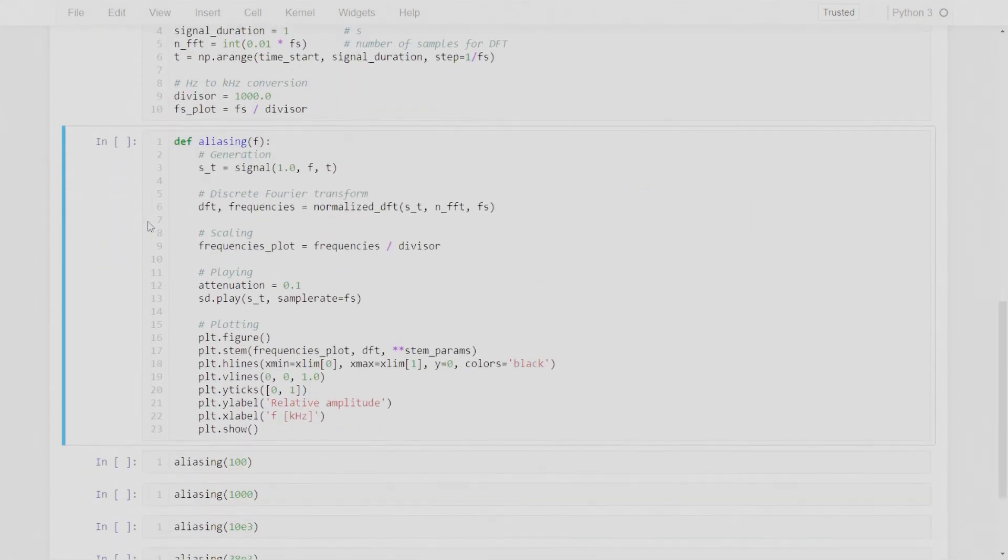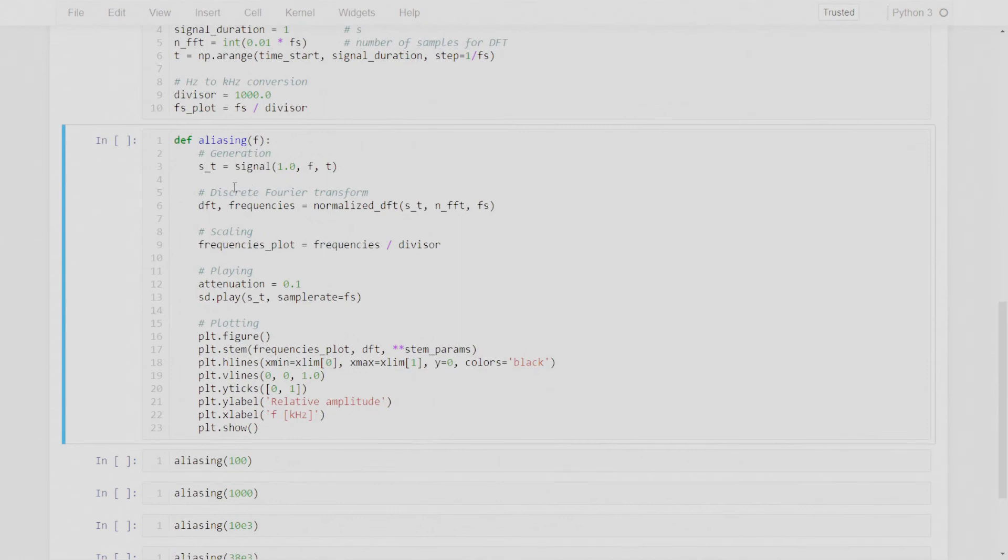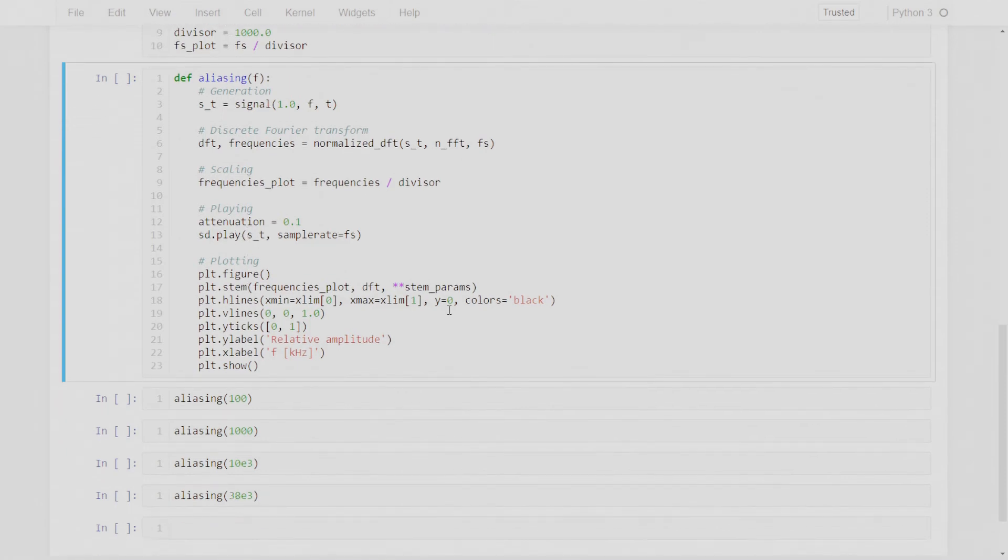Here is the procedure that I'm going to run for every frequency that I'm testing. So first I'm given a frequency f, I'm generating a signal with amplitude one over the time which is one second. And then I'm calculating the discrete Fourier transform on the signal. I'm scaling the frequencies to have them in kilohertz scale, then I play out the signal using some device, and then I plot its discrete spectrum amplitude spectrum.